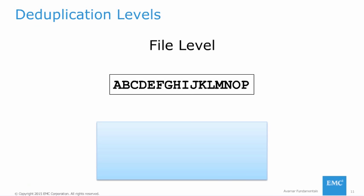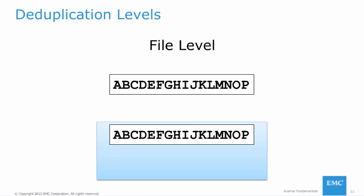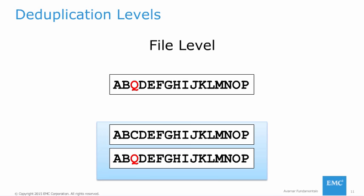There are three levels of deduplication commonly used in the backup industry: file level, fixed block level, and variable block level. With file level deduplication, a file is backed up to the server as long as it has not changed—any repeated backup of an unchanged file does not store new data. However, if there is any change to the file, no matter how small, the entire file needs to be backed up and stored again. Unless the backup client contains mostly static files, this is not a particularly efficient level of deduplication.